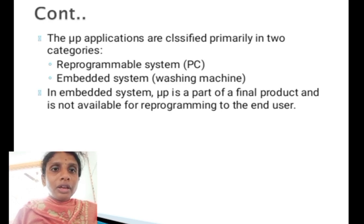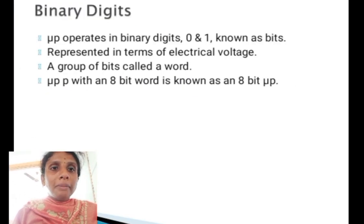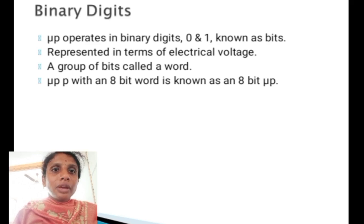In an embedded system, the microprocessor is part of the final product and is not available for reprogramming by the end user. A microprocessor operates in binary digits — zeros and ones — known as bits, represented in terms of electrical voltage. A group of bits is called a word.